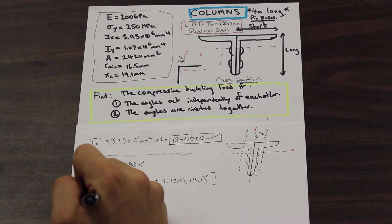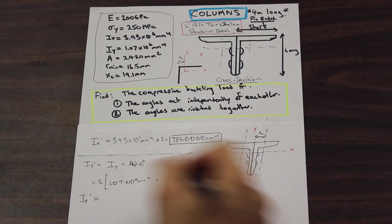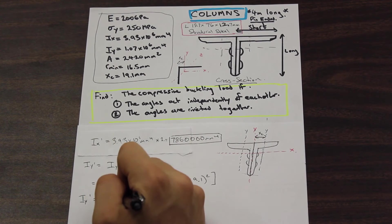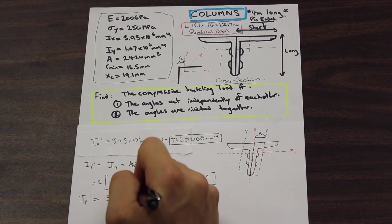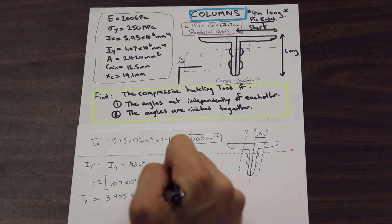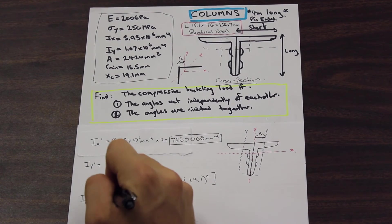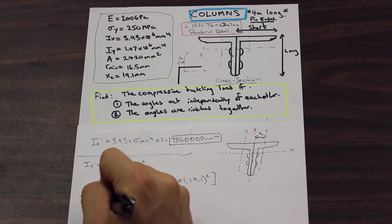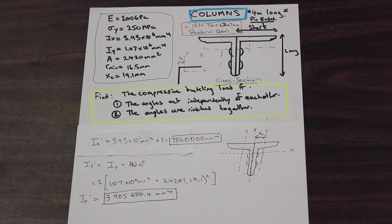Simple as that. And what is our I_y prime? Well, if we put that into our calculator, sorry, I'm just going to write this off of my calculator here. There we have it. That is our new global moment of inertia on the y-axis.